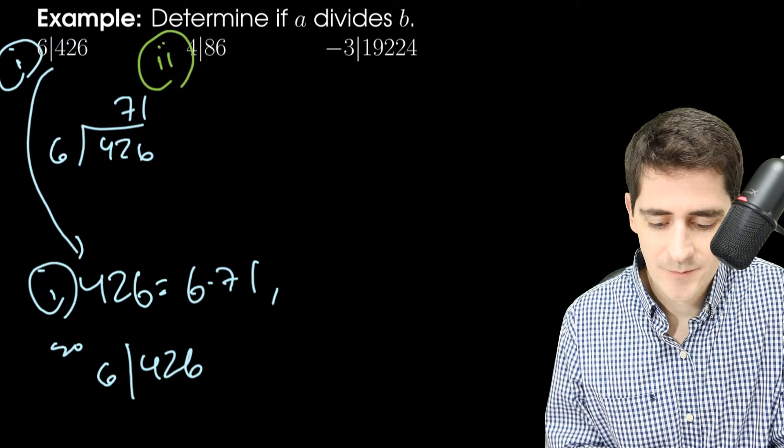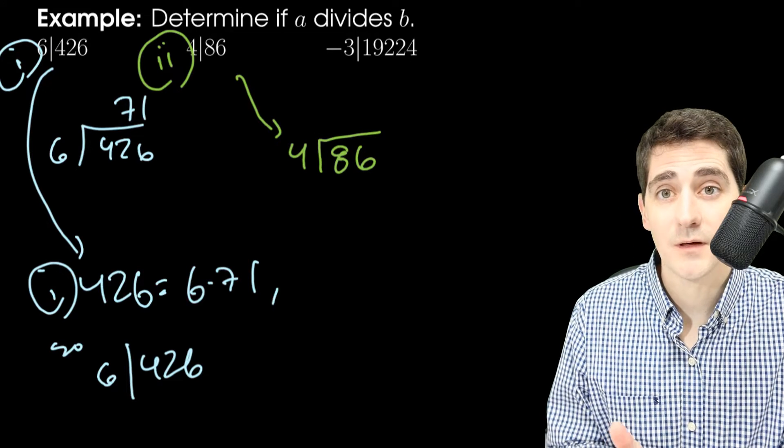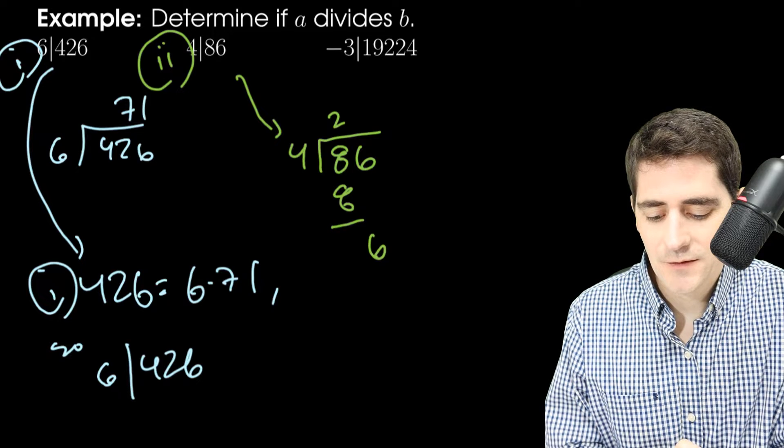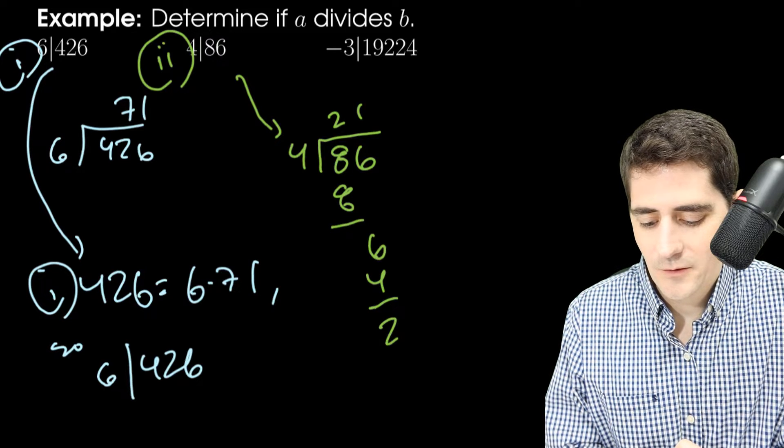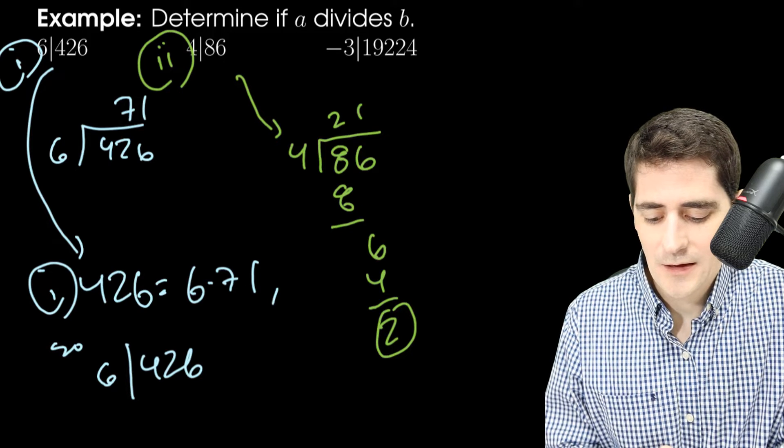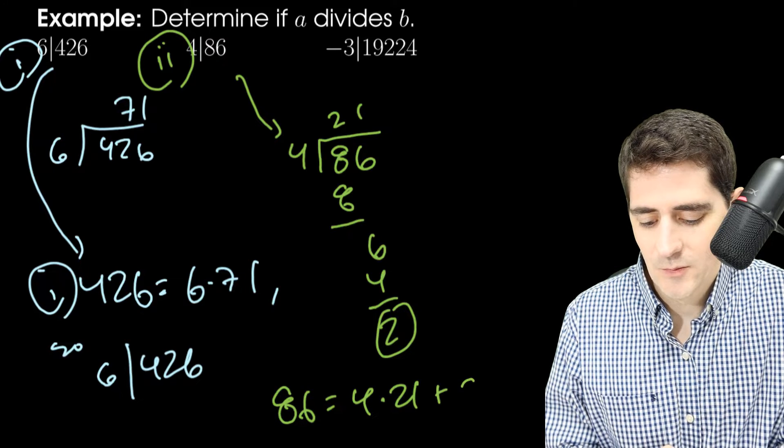Let's do 2 here. How about 86? So if I was going to do long division on 86 with 4, 4 goes in 8 two times, you bring down the 6, you get one more. And so down here I get a remainder. What this means is that I could write 86 as 4 times 21 plus 2.